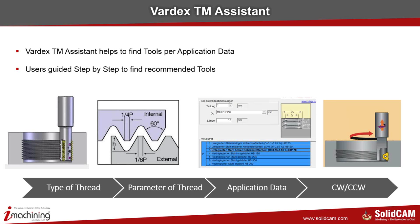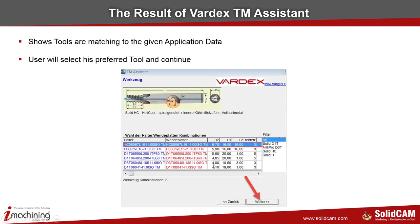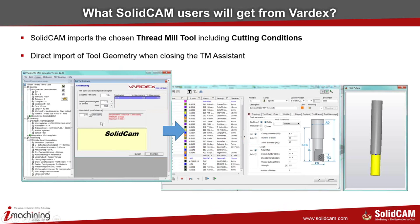The workflow is straightforward. You are guided to define your application type — internal or external thread, thread parameters, material, cutting direction. Going step by step through the assistant, you find a set of tools matching your selection. With the next step you click the tool you want to use, import the information directly into the operation with feeds and speeds all set, so you can use this tool without any further changes.